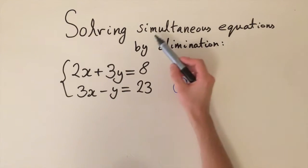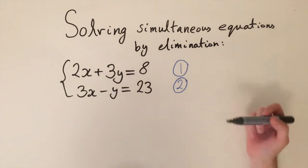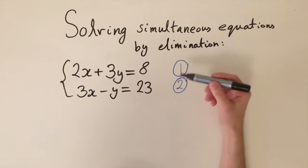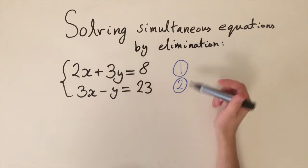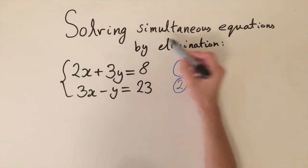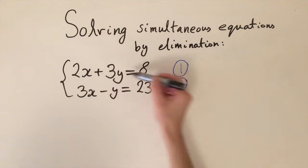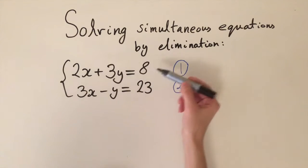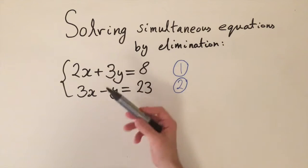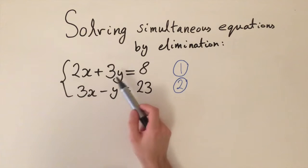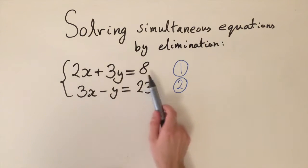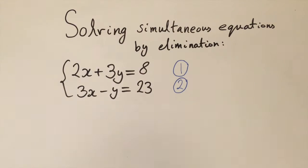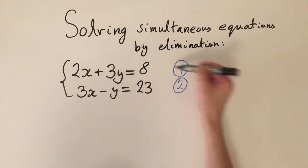Now we're going to look at ways to solve simultaneous equations. In this video we're going to do a method called elimination, and in the next one we're going to do substitution. A simultaneous equation is a pair of two equations with two variables in each one, and we want to find values of x and y that satisfy both equations at the same time — that's what the word simultaneous means.